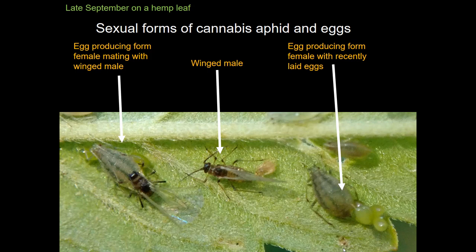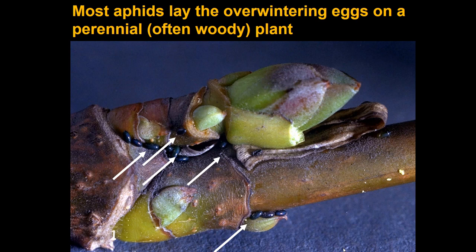This picture, taken just last year, actually shows male aphids — two male aphids — and egg laying. This is the cannabis aphid. The picture on the left shows a male mating with the special female form produced at the end of the year. There's a single winged male in the middle, and on the right is that special female after mating, laying eggs. This was the first time I had ever seen a male aphid or mating aphids.